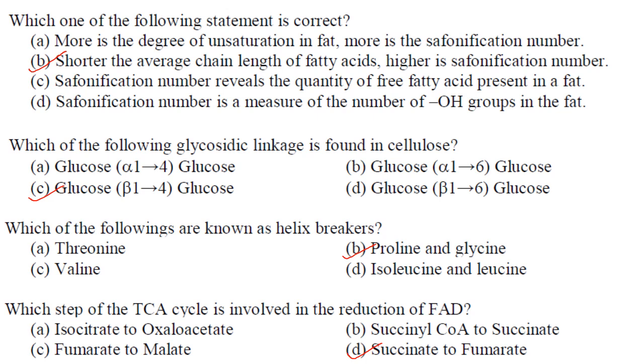Which glycosidic linkage is found in cellulose? In cellulose you have glucose linked to glucose through β(1→4) glycosidic bond. Answer is option C. Which are known as helix breakers? Proline and glycine are known as helix breakers. Answer is option B.